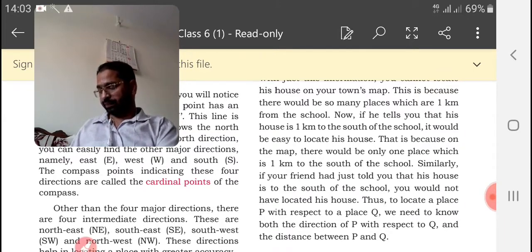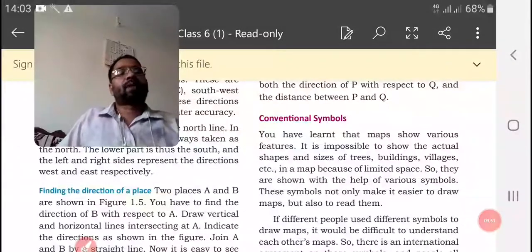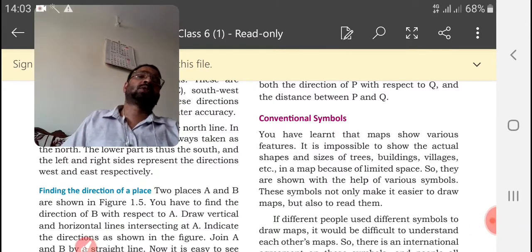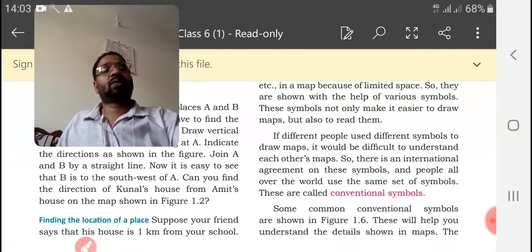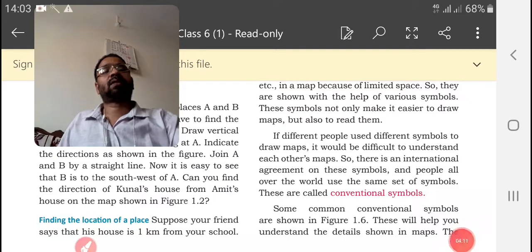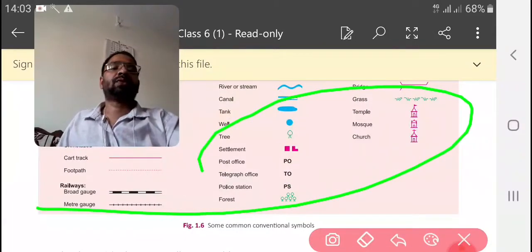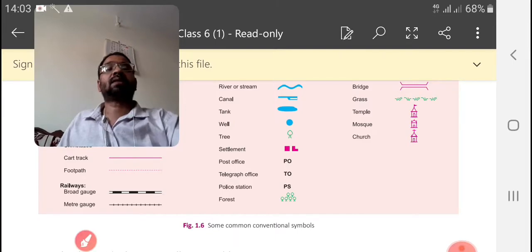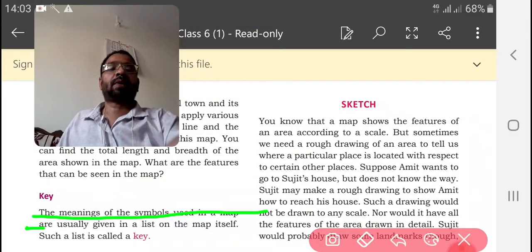Now let us go to conventional symbols. We have learned conventional symbols. Drawing or showing all the things on a map is impossible, so we are using some particular type of symbols on maps to represent particular features. These are the conventional symbols. I have asked you to learn figure number 1.6 so that you can be familiar with these symbols. Then key: what do you mean by key? The meaning of symbols used in a map are usually given in a list on the map called key.